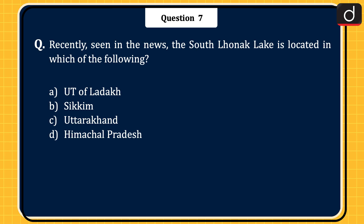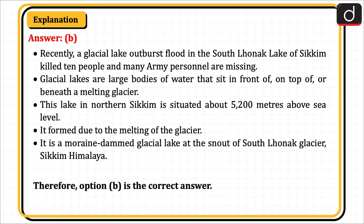The next question, recently seen in the news: the South Lhonak Lake is located in which of the following — UT of Ladakh, Sikkim, Uttarakhand, or Himachal Pradesh? The correct answer is option B, Sikkim. Recently, a glacial lake outburst flood in the South Lhonak Lake of Sikkim killed 10 people and many army personnel went missing. Glacial lakes are large bodies of water that sit in front of, on top of, or beneath a melting glacier. This lake in northern Sikkim is situated about 5,200 meters above sea level. It is a moraine-dammed glacial lake at the snout of the South Lhonak Glacier, Sikkim Himalaya. Therefore, option B is the correct answer.